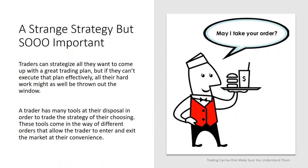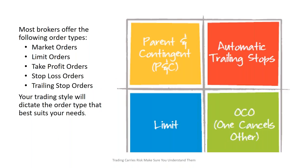Traders can strategize all they want to come up with a great trading plan, but if they can't execute it effectively, all their hard work is thrown out the window. A trader has many tools at disposal to trade the strategy of their choosing — these come in the form of different orders that allow entering and exiting the market at their convenience. Most brokers offer market orders, limit orders, take profit orders, stop loss orders, trailing stop loss orders, OCO one-cancel-the-other, parent and contingent orders. Your trading style will dictate the order type that best suits your needs.